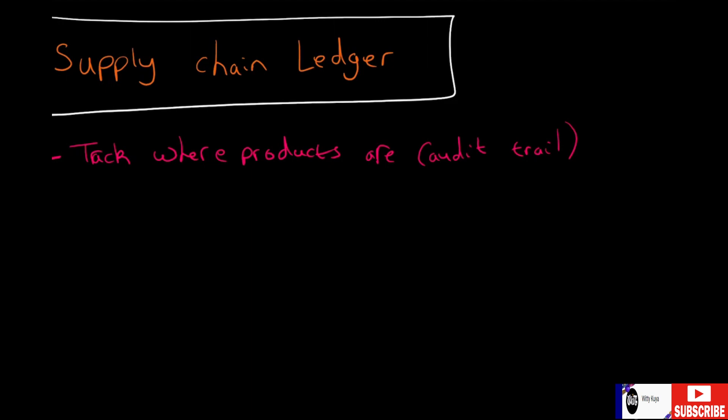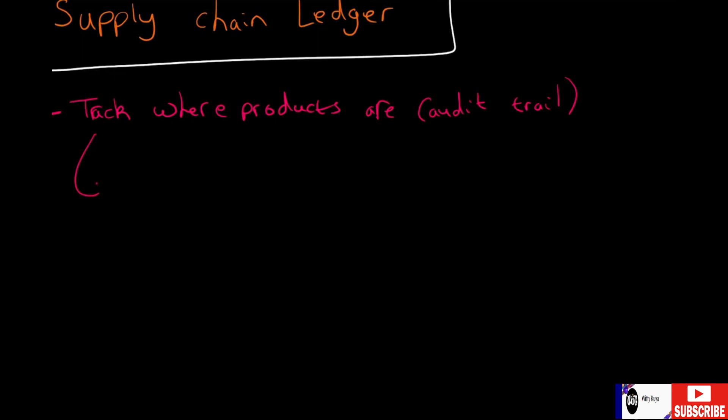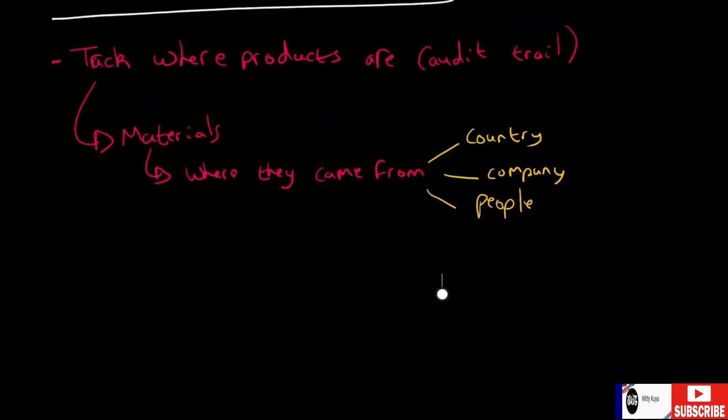On top of that, it allows you to track the materials that go into the product. Where they came from—that includes stuff like the country, the company responsible for potentially mining or processing it, and the people involved as well.